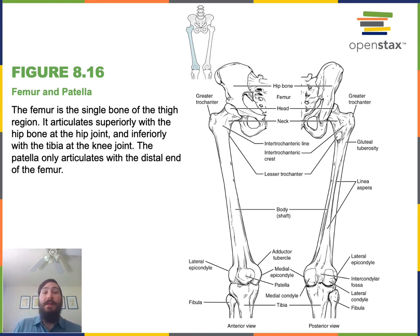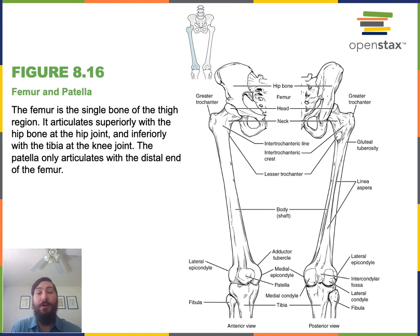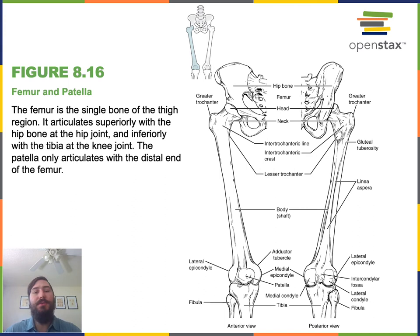On the anterior at the distal end of each femur, the patella is a sesamoid bone embedded in a tendon of the quadriceps femoris muscle. The patella functions to protect the anterior of the knee joint and also to redirect the force of the quadriceps muscles to enable extension of the knee joint when those muscles contract.